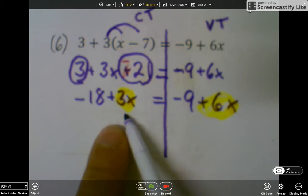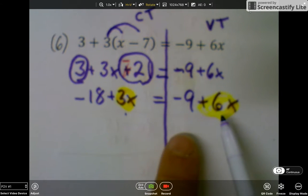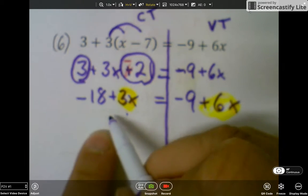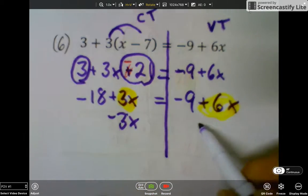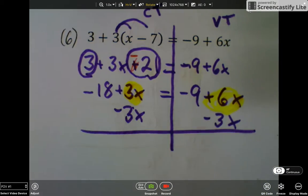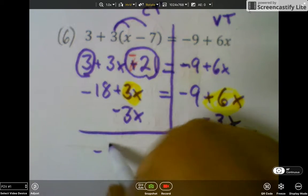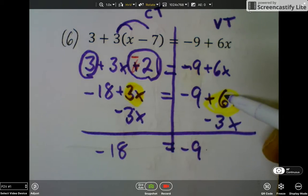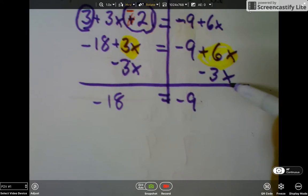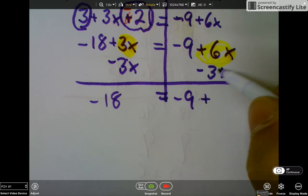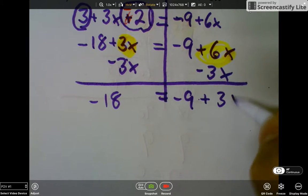So I need to bring this variable term to the constant term side. So I have to get rid of this 3x by doing minus 3x on both sides. And that's going to give me negative 18 equals negative 9, and then 6x minus 3x is going to be plus 3x.